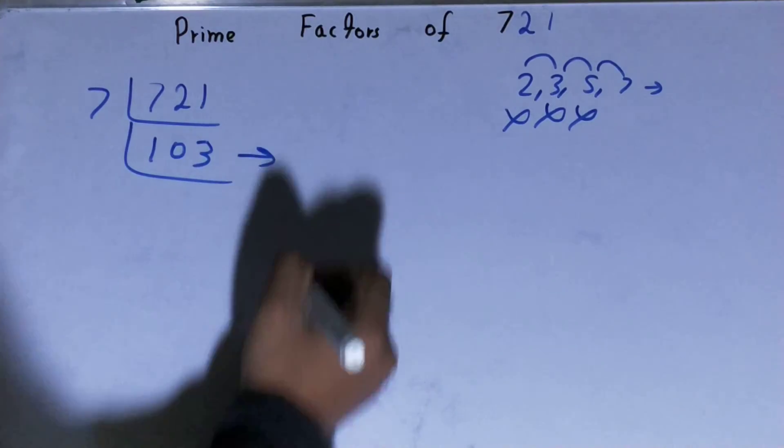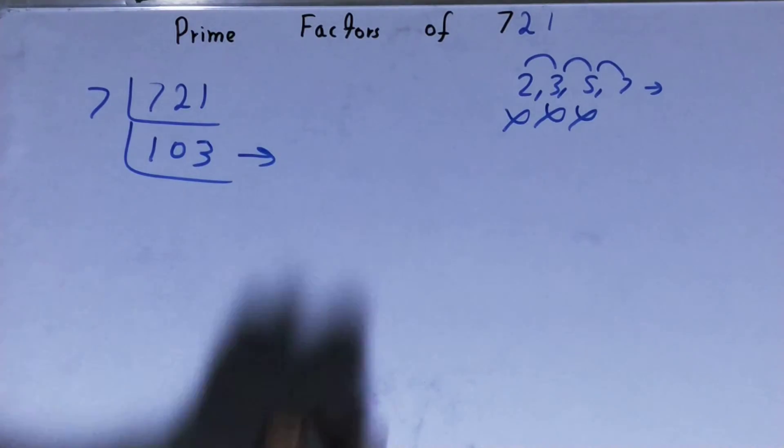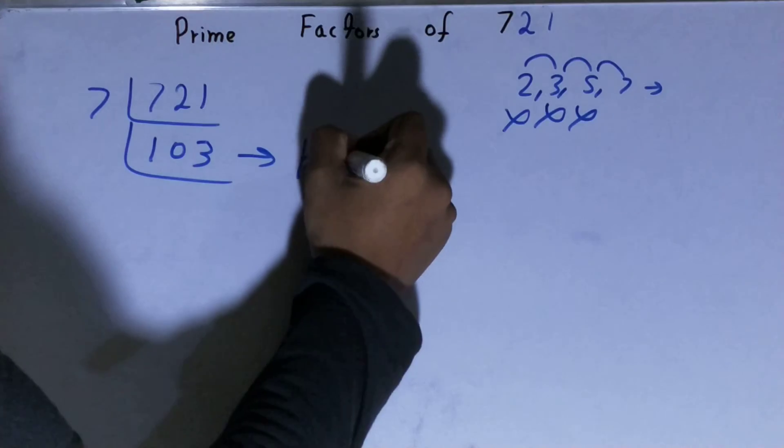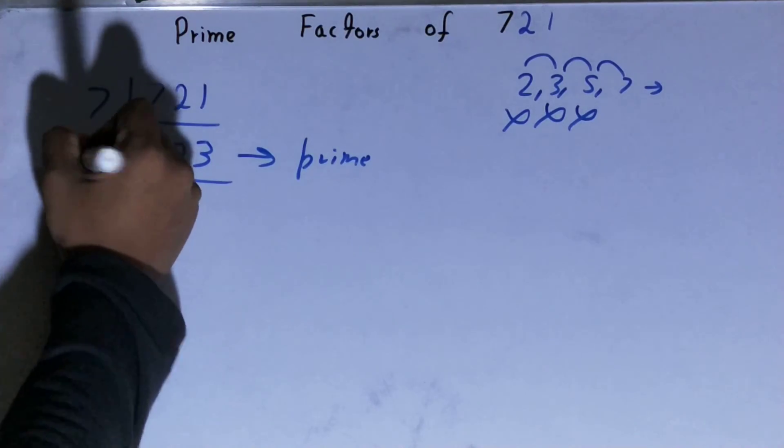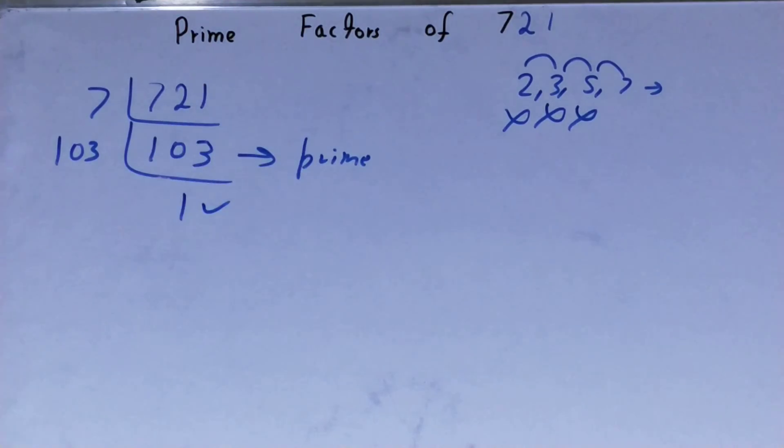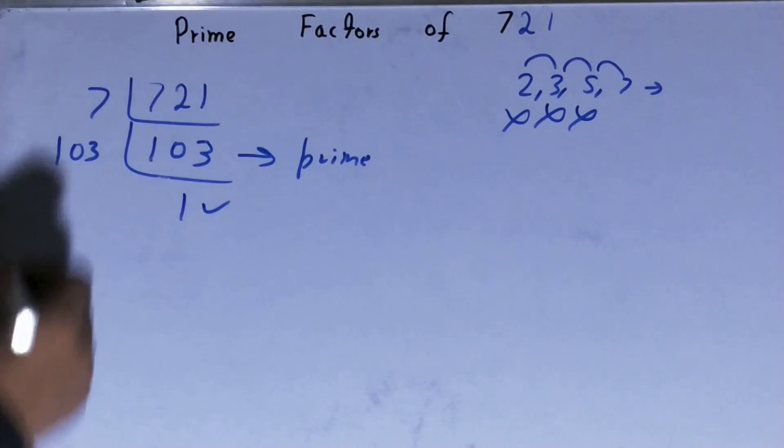And 103 is further not divisible by any other prime number. Why? Because 103 is itself prime. And to divide this 103, you need 103 on the left-hand side. And when you do so, you will be left with 1.